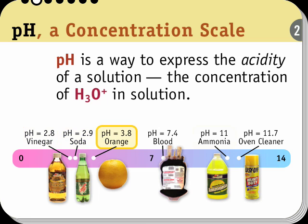At the high end of the scale, household ammonia has a pH of about 11. Oven cleaner, which is really sodium hydroxide, has a pH of 11.7. About in the middle is blood with a pH of 7.4, slightly on the basic side of neutral.